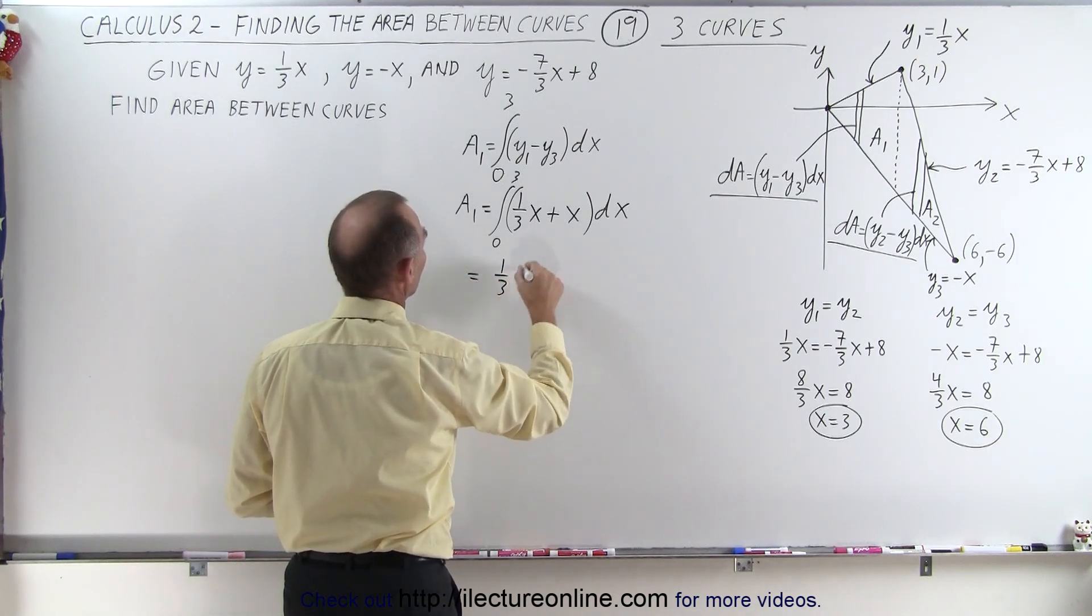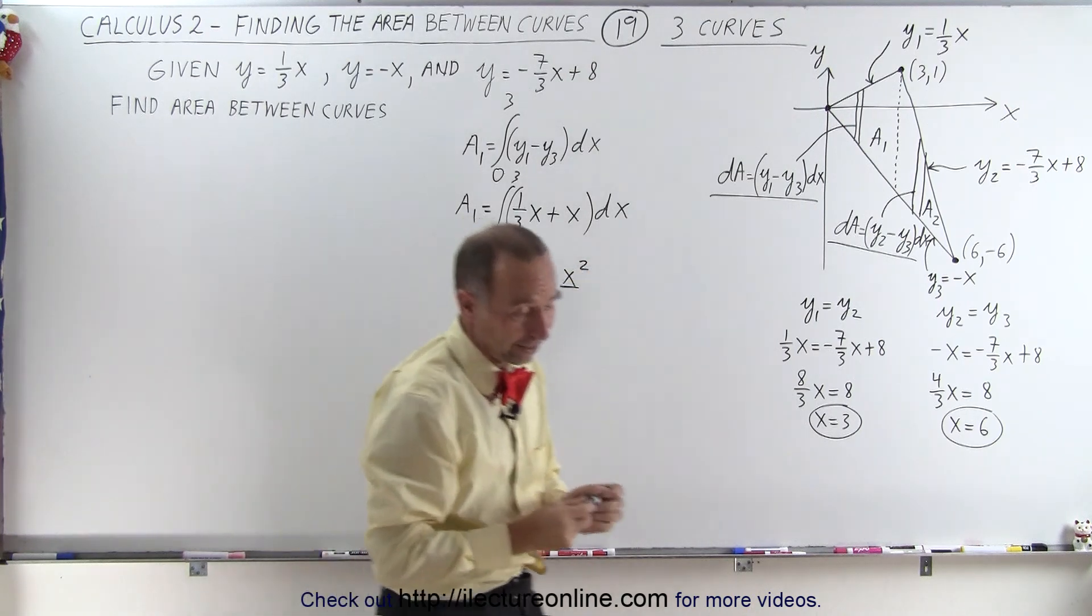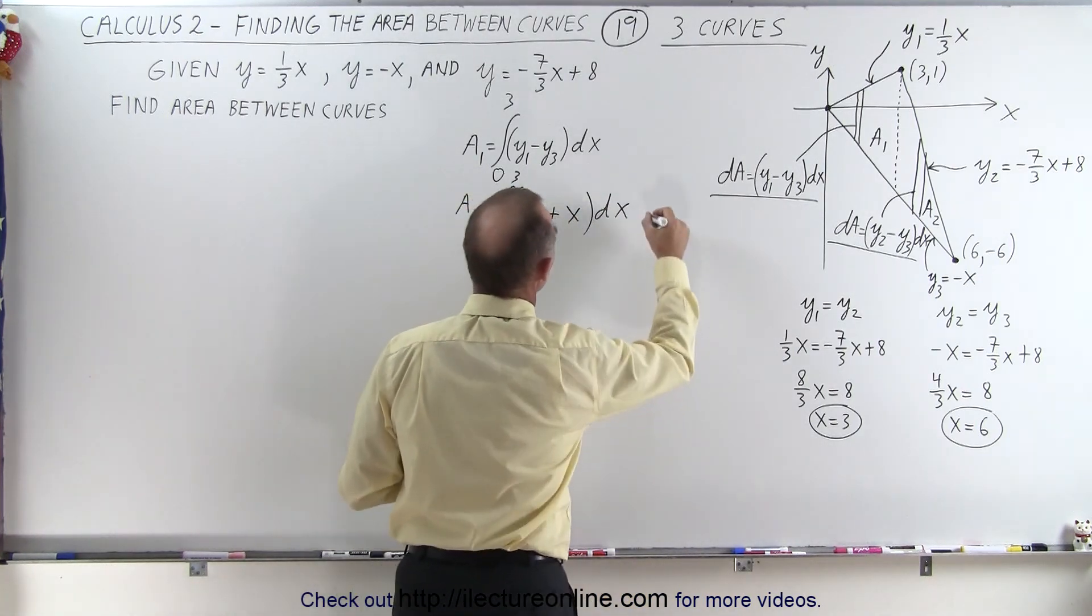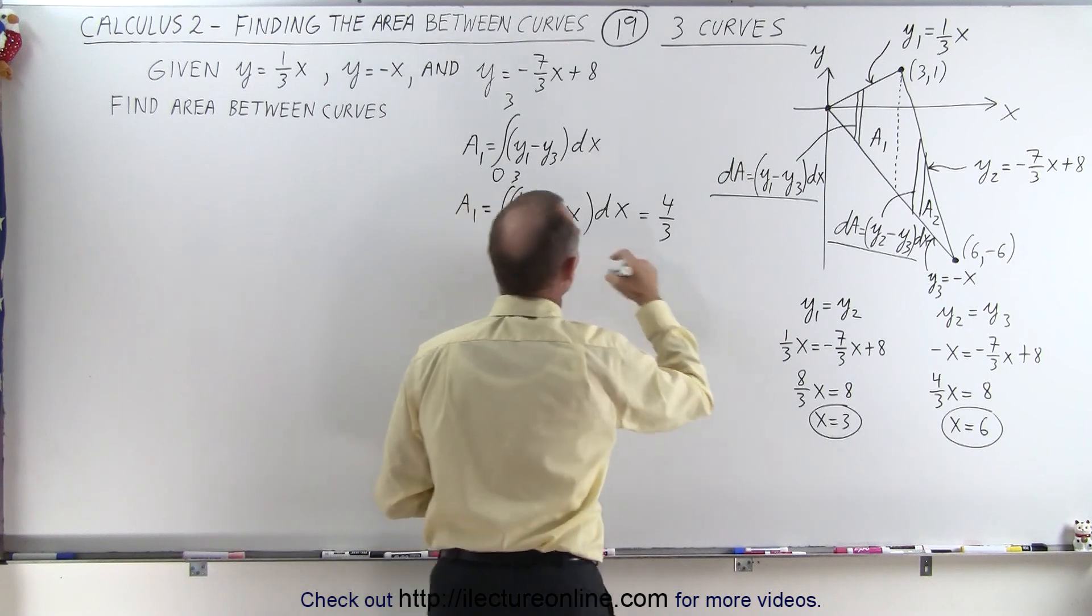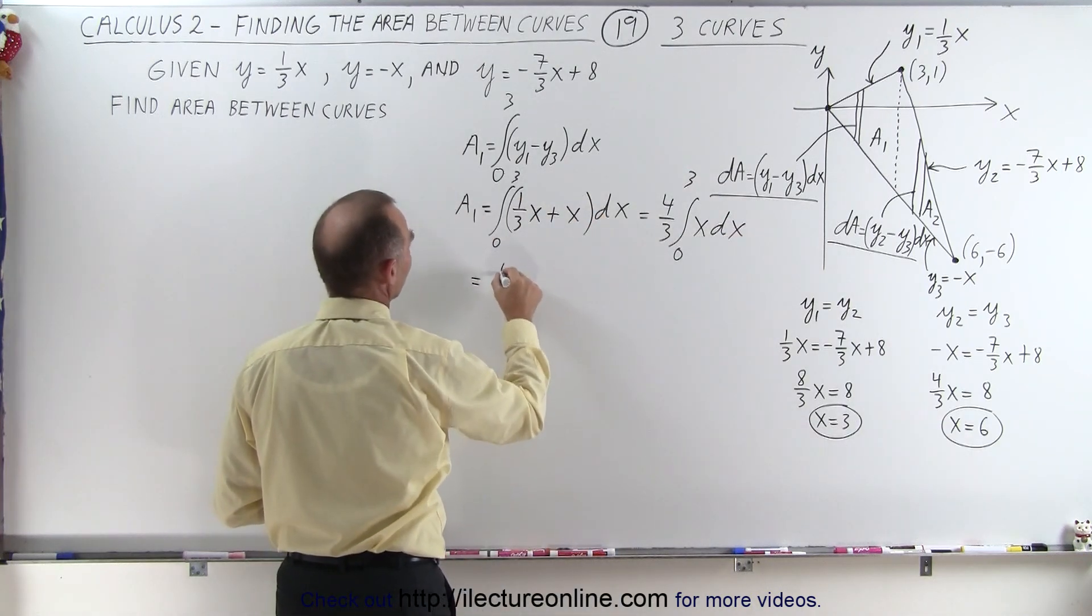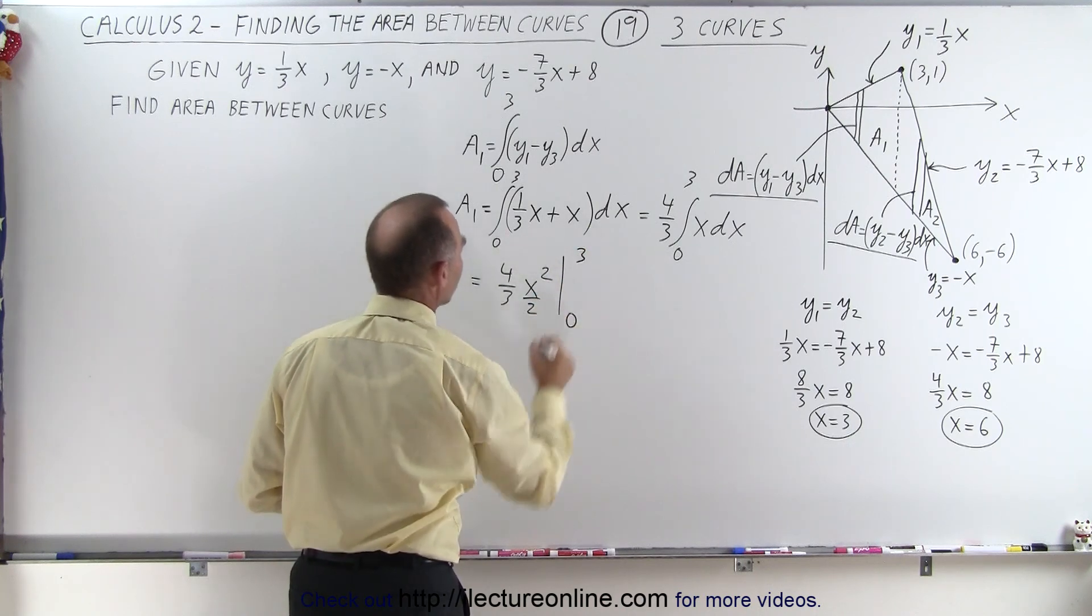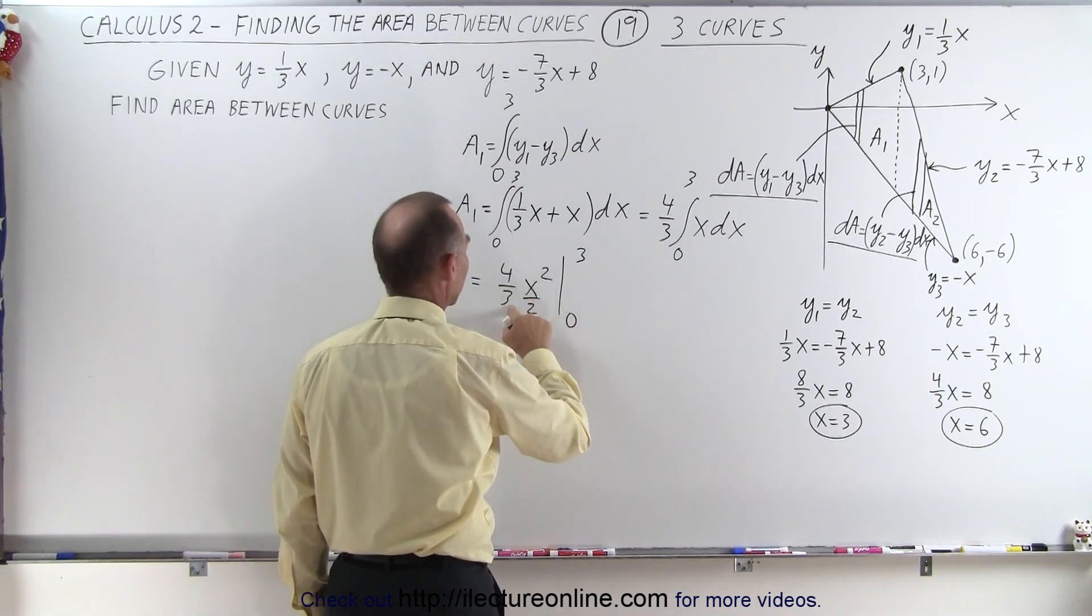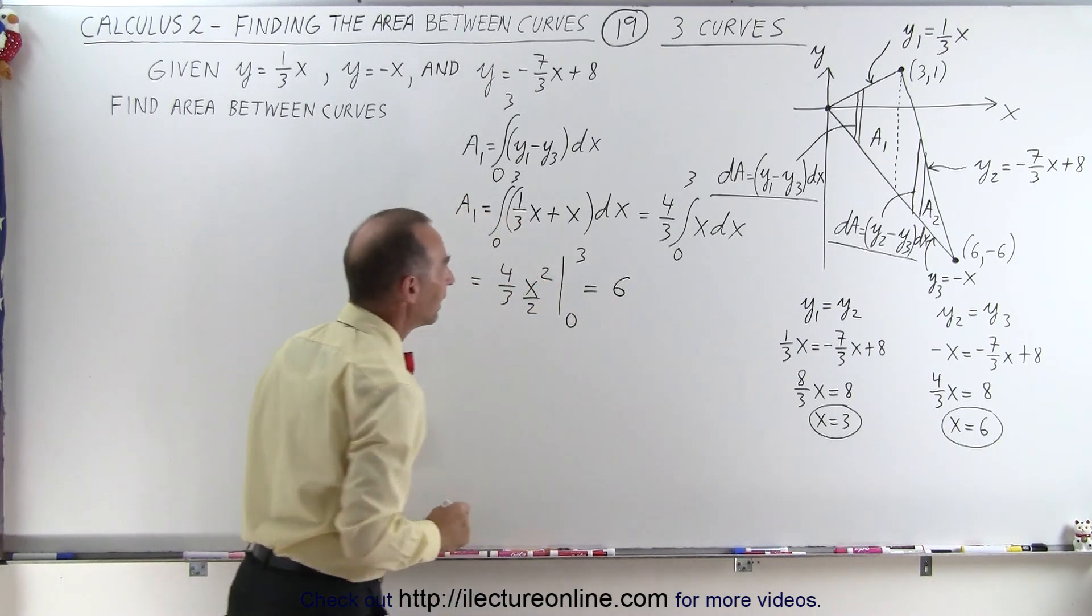Before I even do that, I just realized I can simply add those two together, so this can be written as 4/3, this is 1/3 plus 1, so that's 4/3 times the integral from 0 to 3 of x dx. So this is equal to 4/3 times x squared over 2, evaluated from 0 to 3. When I plug in the lower limit, we don't get anything. Plug in the upper limit, we get 9. 9 divided by 3 is 3, and 4 divided by 2 is 2, 2 times 3, that is equal to 6. So area 1 is equal to 6.